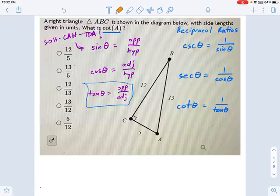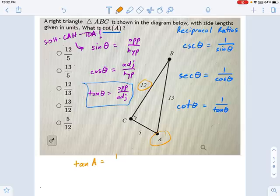So, changing colors here, I'm looking at angle A, and the tangent of angle A is going to be equal to the opposite over the adjacent, meaning 12, which is the opposite, divided by 5, which is my adjacent.